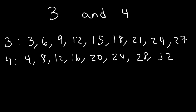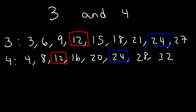So now which ones are common multiples of 3 and 4? 12 is a common multiple between 3 and 4 — as we can see, it's found in both lists. Another common multiple is 24. Now which of these is the least common multiple? Well, 12 is lower than 24, so 12 is the LCM — the least common multiple between 3 and 4.